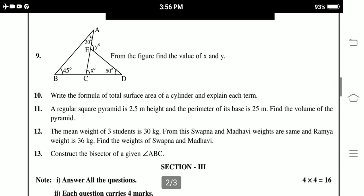The mean weight of 3 students is 30 kg. From this, Swapna and Madhavi weights are same. And Ramya weight is 36 kg. Find the weights of Swapna and Madhavi. Construct a bisector of a given angle ABC.